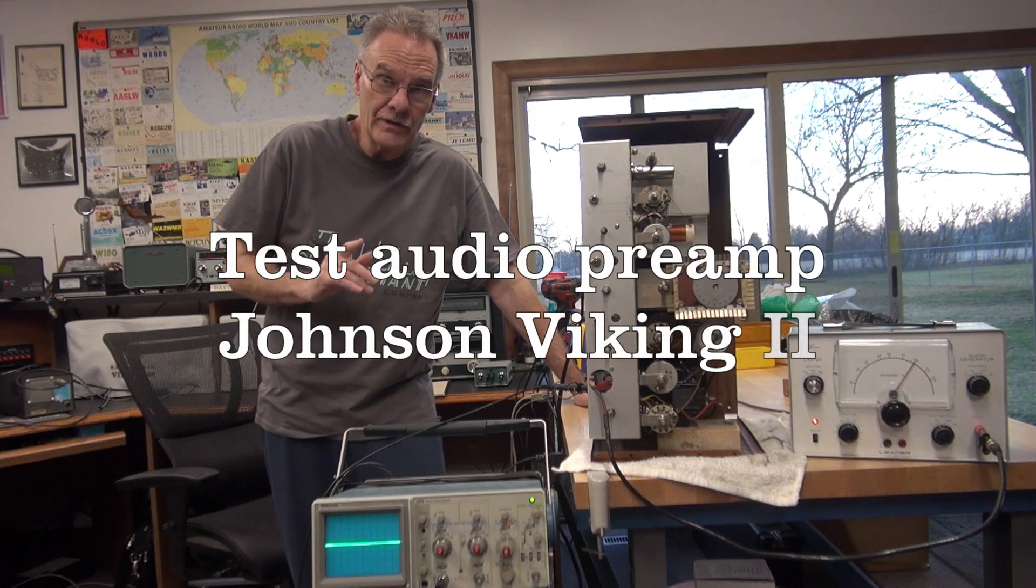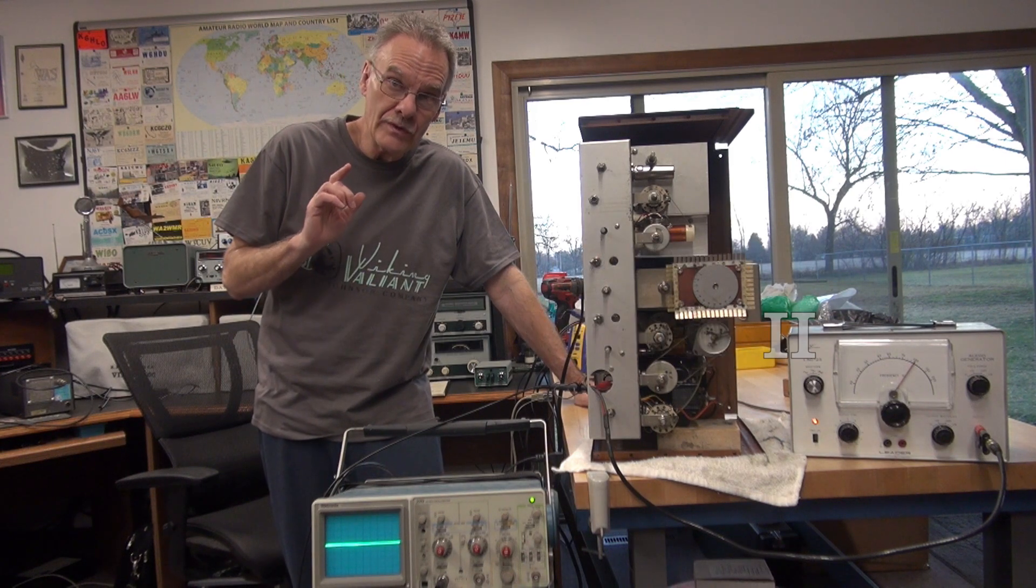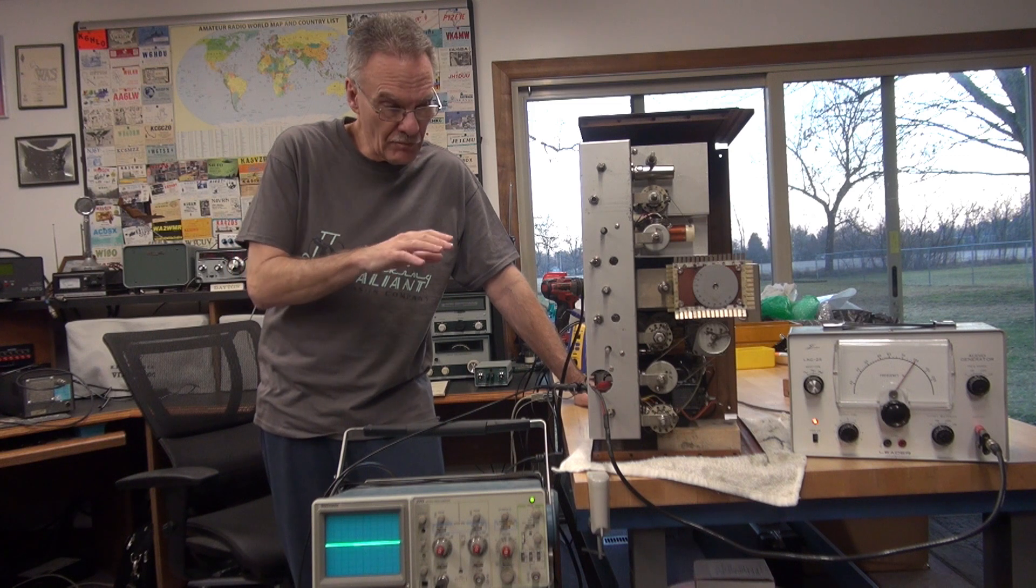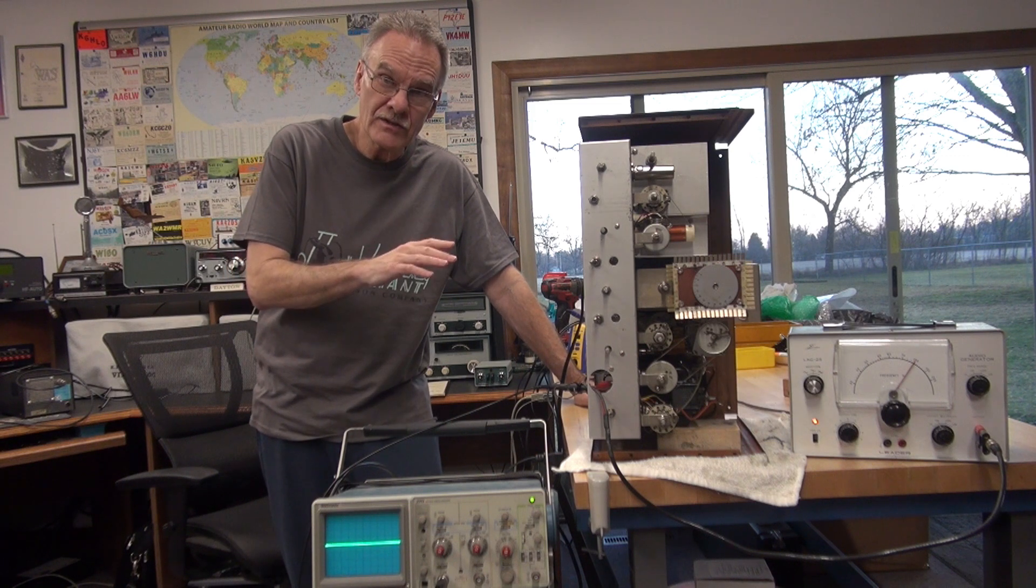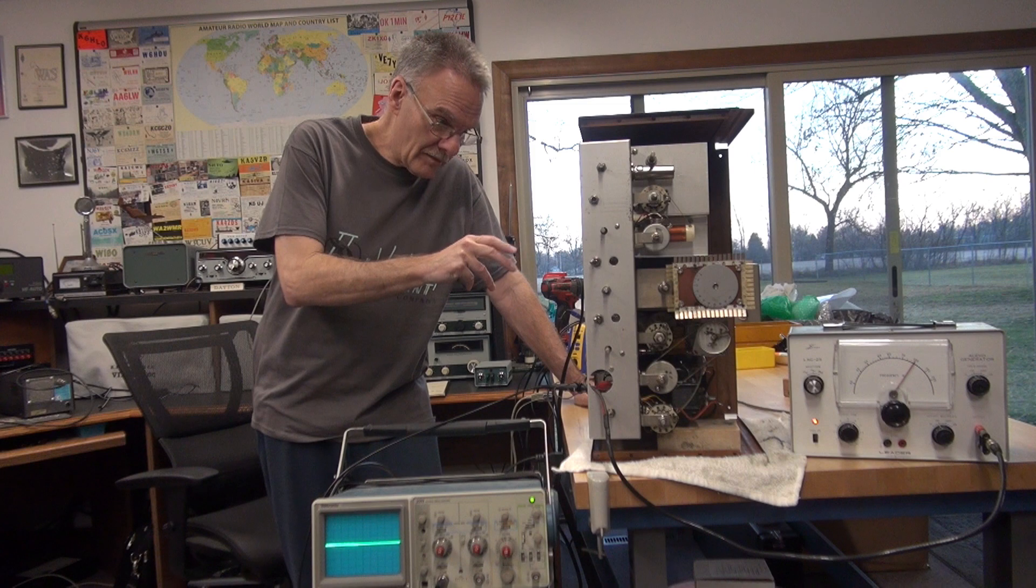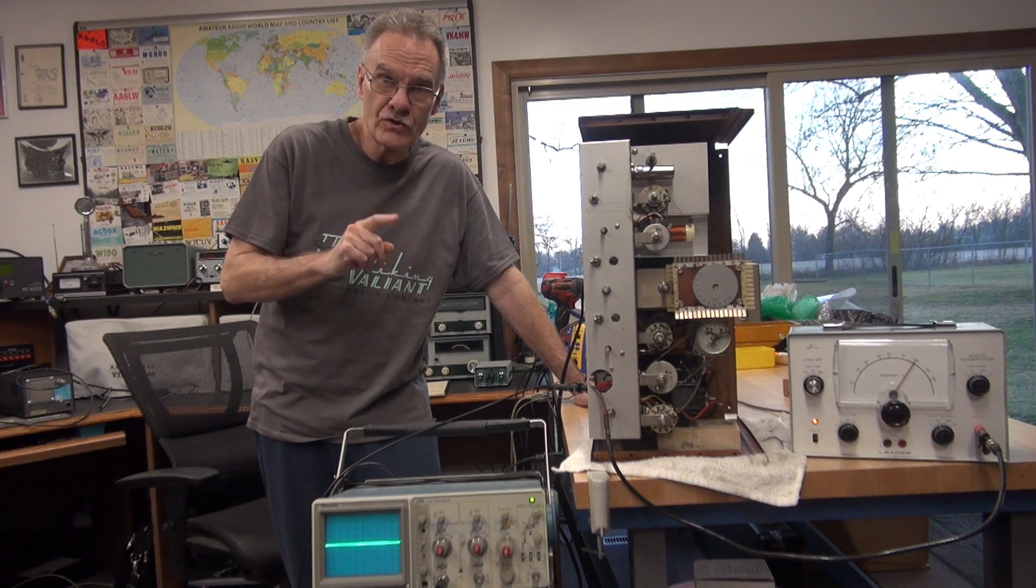Hi, it's Terrian 6TLU. In this video, I'm going to show you an easy way to test the preamp section in a Johnson Viking 2 right up to the grids of the 807s without turning on high voltage.